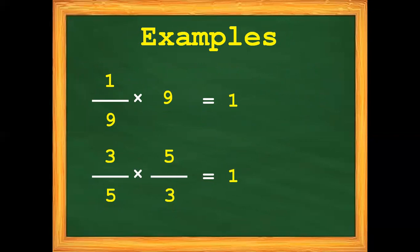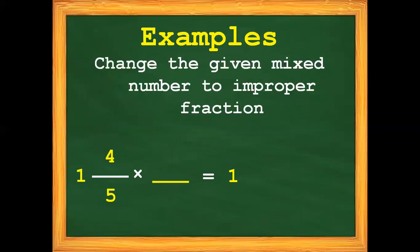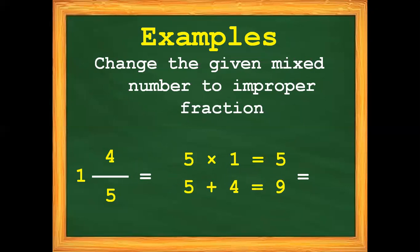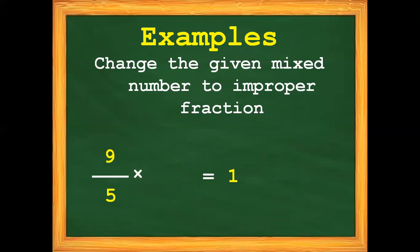3 fifths — the reciprocal of 3 fifths is 5 thirds, so the product of 3 fifths and 5 thirds is 1. Now for 1 and 4 fifths: before we get its reciprocal, we have to change this mixed number into an improper fraction. 5 times 1 gives us 5, then add the numerator 4, giving us 9. So the improper fraction for 1 and 4 fifths is 9 fifths. Now, 9 fifths times blank is equal to 1.